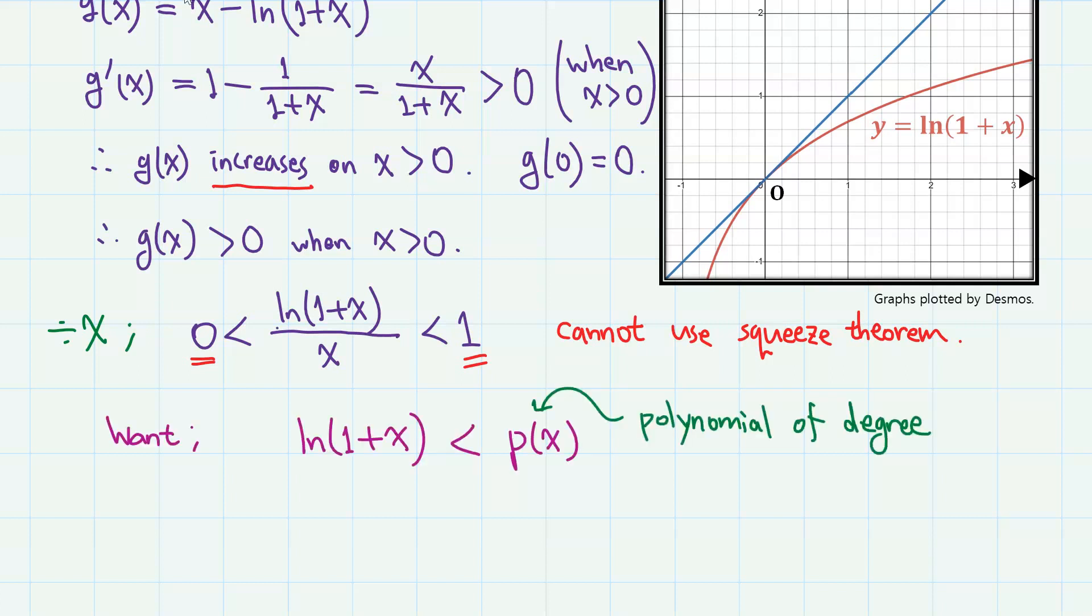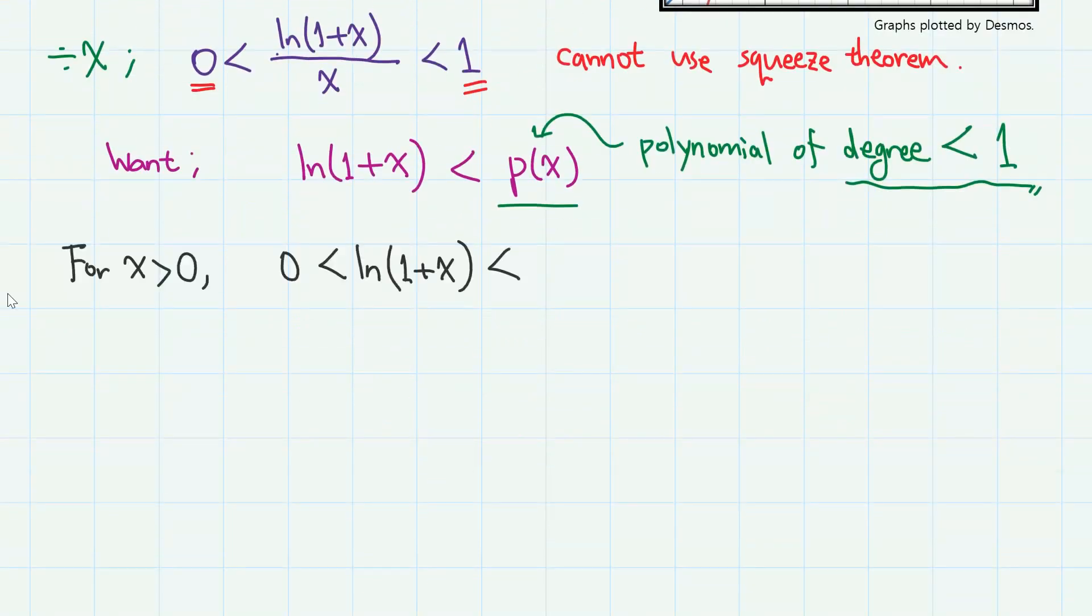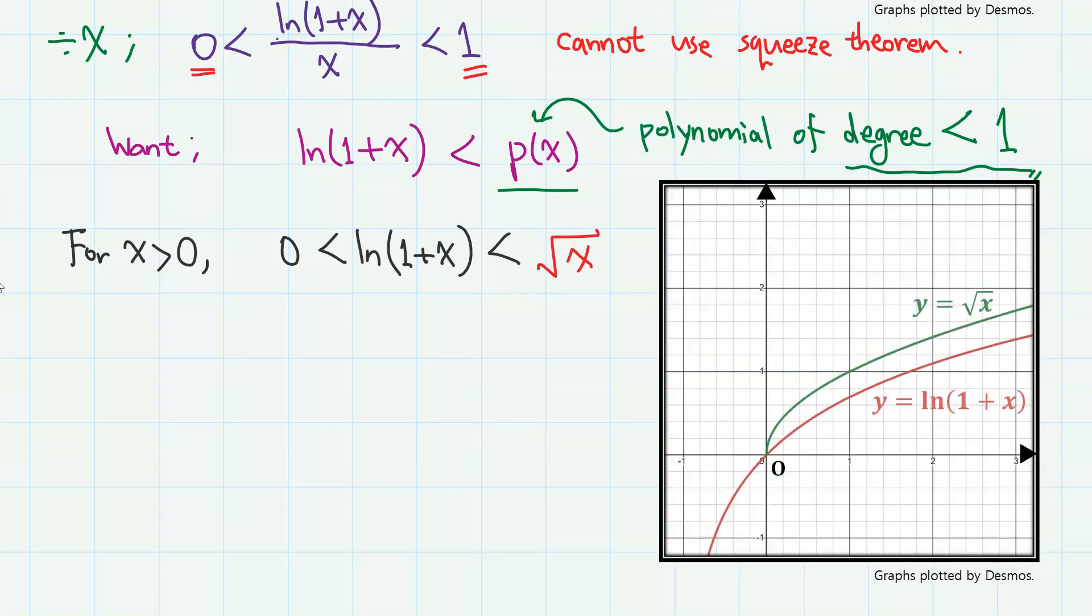We must show that ln(1 + x) is less than a polynomial of degree less than 1. What I am going to do here is to prove that for when x is positive, ln(1 + x) is less than square root of x, which is less intuitive in terms of graphs than the previous one.